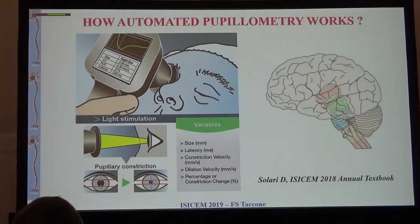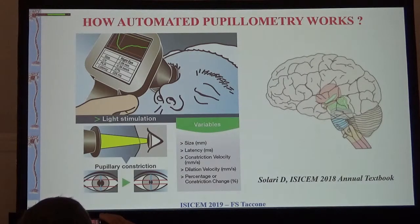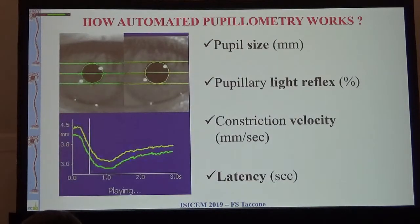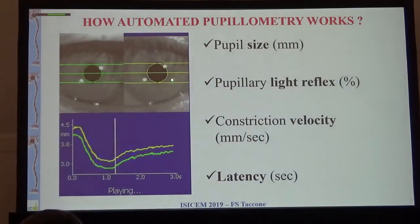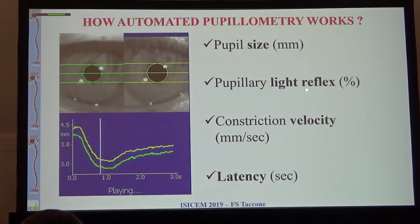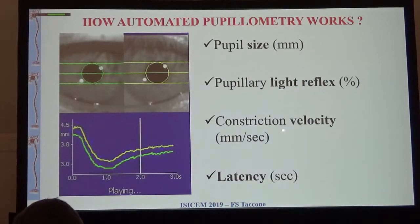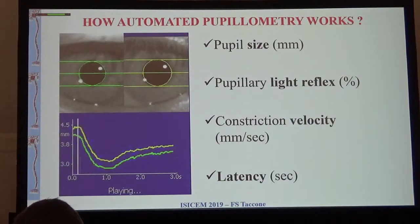This is how it works. We have a system that is able to provide a pupillary light reflex stimulus to the pupils. You can record it - it is automatized and can be easily quantified. You can see this on the video: you can calculate the pupillary size baseline, the percentage of pupillary light reflex, quantify the reflex, measure velocity, and also assess the latency.